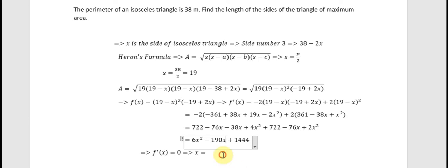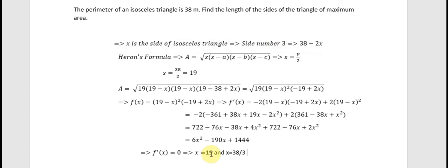We get x equal to 19, and x equal to 38 divided by 3. We know that x equal to 19 means 19 multiplied by 2, so the third side becomes zero — so we reject this value. For x equal to 38 divided by 3, we accept this answer.